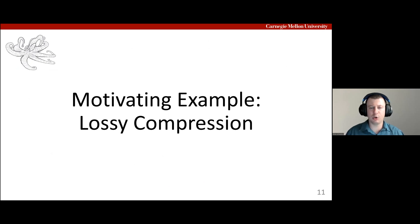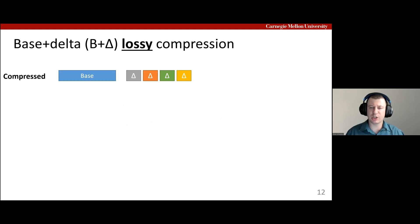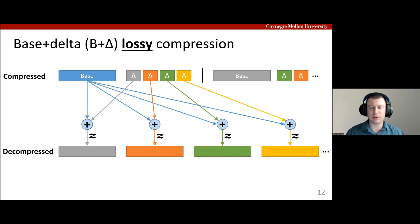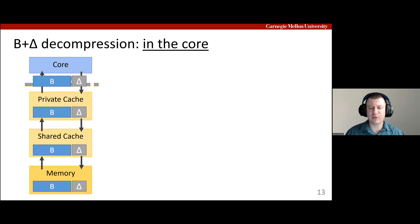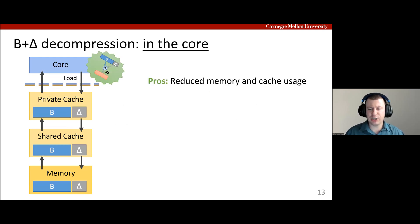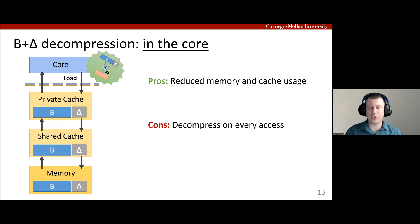We're going to start with a simple example that shows TACO callbacks in action and introduces its main components. This example focuses on a lossy compression scheme where an object is constructed from a base and delta. Unlike the conventional base-plus-delta scheme, values are approximate of the originals. Lossy compression schemes are attractive because they can increase compression ratio. On current systems, if an application wants to access the decompressed data, it needs to load the compressed data from memory into the core and then perform the decompression. The benefit of compression is reduced memory and cache usage since only the compressed data is stored. However, if there is temporal reuse on the data, the core needs to repeatedly decompress the same data, wasting time and energy.